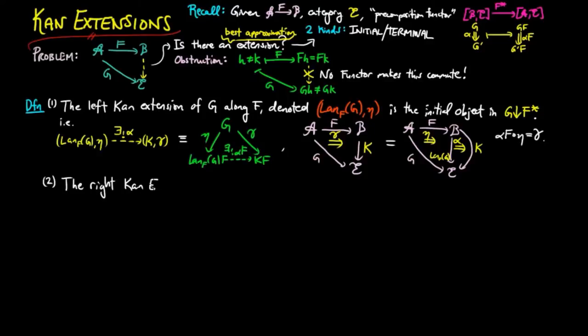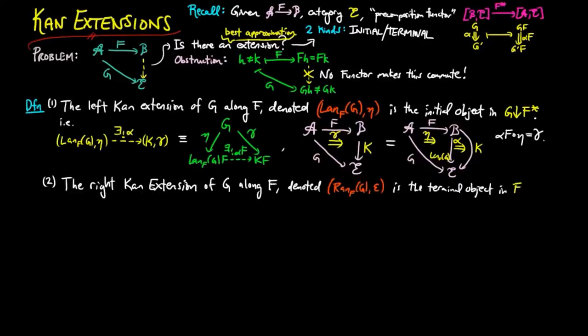And two, the right Kan extension of G along F, denoted Ran_F G epsilon, is the terminal object in F upper star over G. In other words, given K delta in F upper star over G, there is a unique morphism alpha to the right Kan extension,